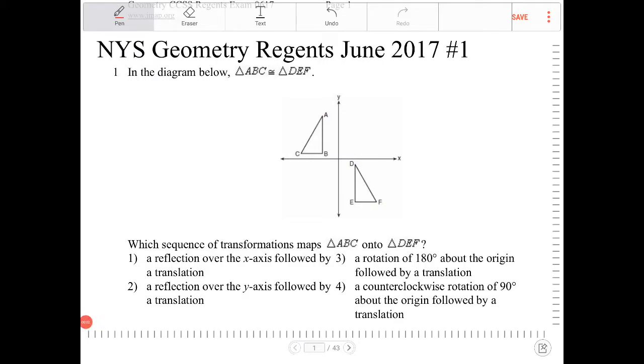In a diagram below, triangle ABC is congruent to triangle DEF. Which sequence of transformations maps triangle ABC onto triangle DEF?